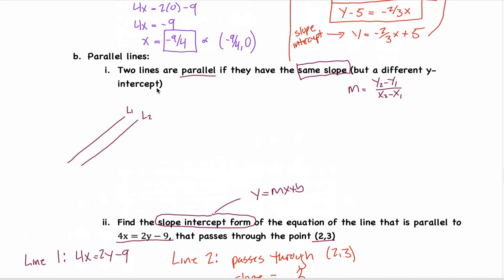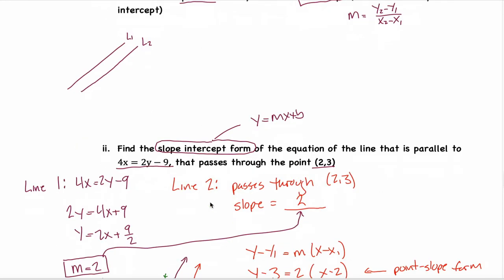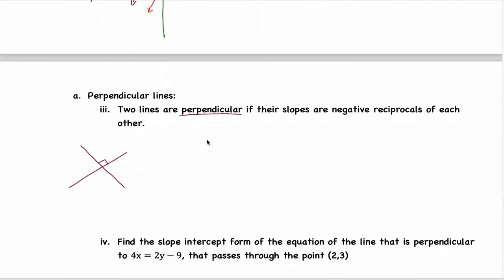Technically, they also need different y-intercepts, because if they have the same y-intercept they're the same line — but you don't have to worry about that nuance. Same slopes means parallel. But what if the lines are perpendicular instead? Perpendicular lines certainly don't have the same slope, but there is a nice relationship between their slopes.